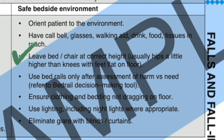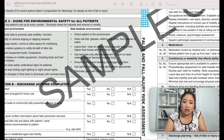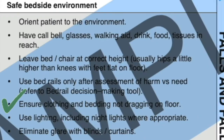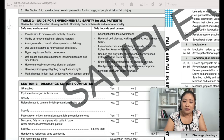Leave the bed or chair at the correct height. Use bed rails only after assessment of harm versus the need for them — there is a bed rail decision-making tool to help determine whether your patient needs bed rails up or down. Ensure clothing and bedding are not dragging on the floor. Use lighting including night lights where appropriate, and eliminate glare with blinds or curtains. This information is really important — please try and memorize it, as you will need it even after you pass your OSCE and during interviews.